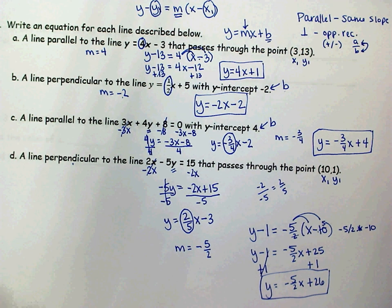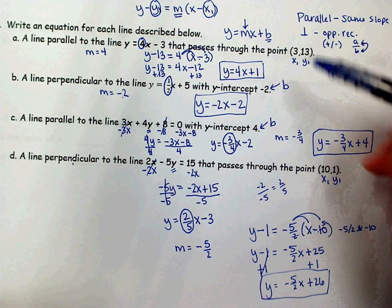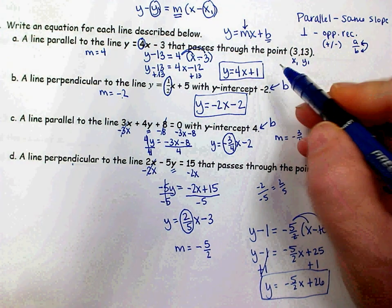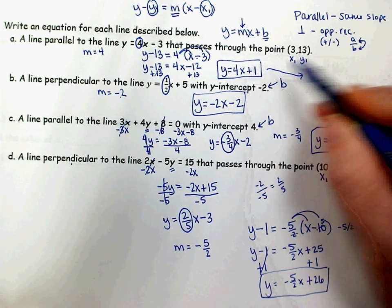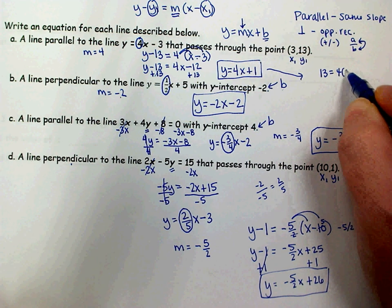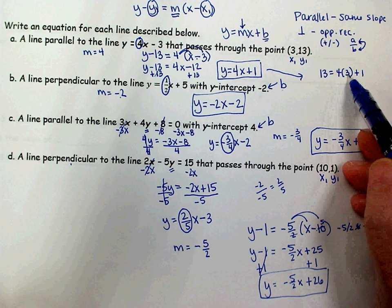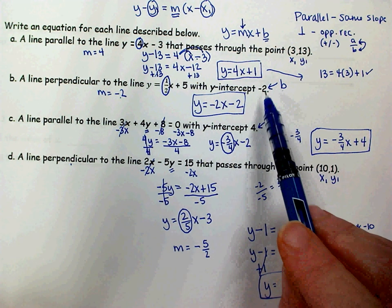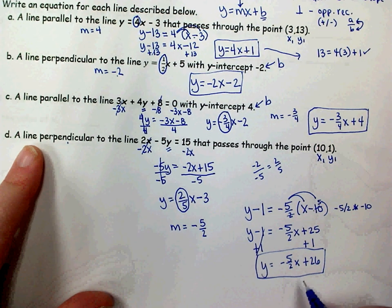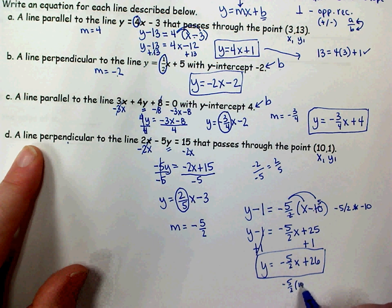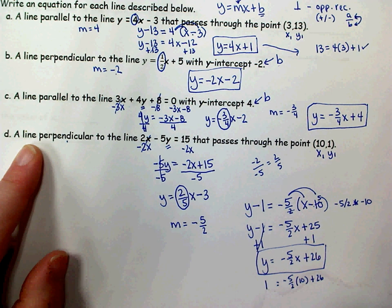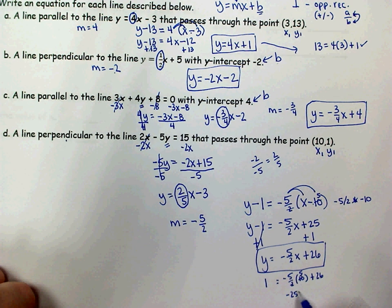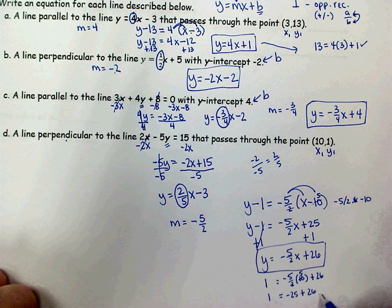You can check your answers on parts A and D by putting the given point in for x and y and making sure it's a true statement. On part A, putting 3 in for x and 13 for y: 4 times 3 is 12, plus 1 is 13. On part D, putting 10 in for x: 2 goes into 10 five times, negative 5 times 5 is negative 25, and negative 25 plus 26 is 1. So both equations check out.